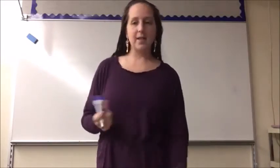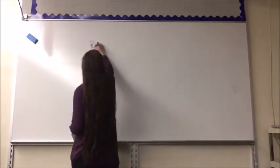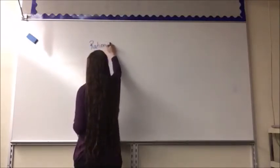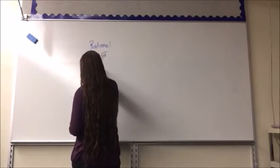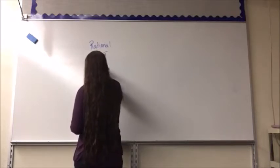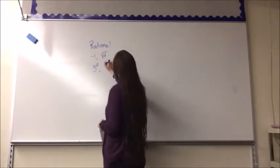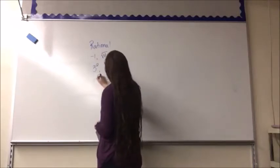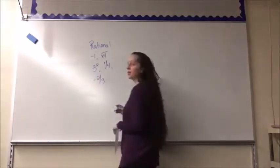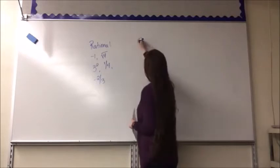Here are examples of rational numbers: negative one; square root of four equals two; square root of nine equals three; one-fourth; and negative two-thirds. All of these are rational numbers.